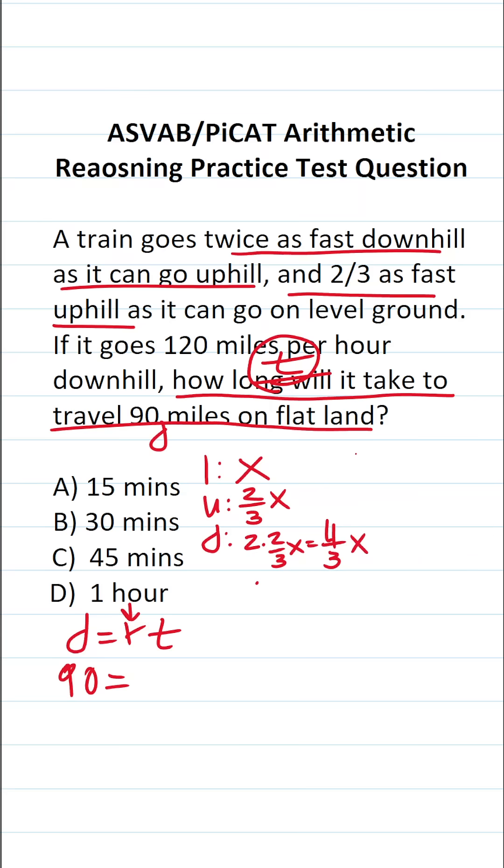All right, let's go ahead and solve for X here. Again, we know the train goes 120 miles per hour downhill, and that's going to be equal to four-thirds X.